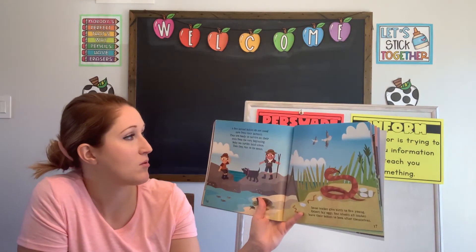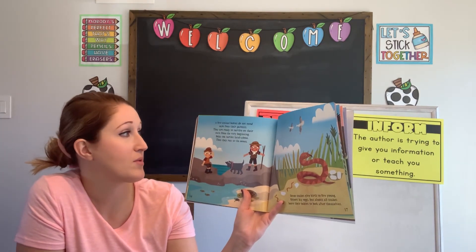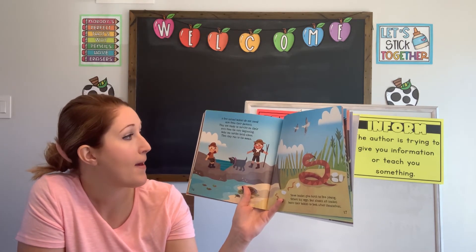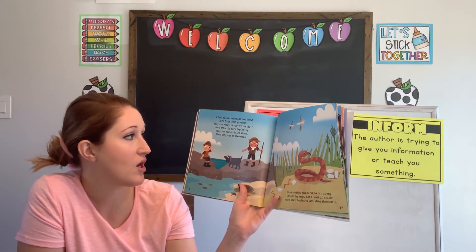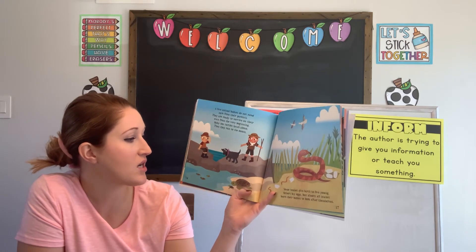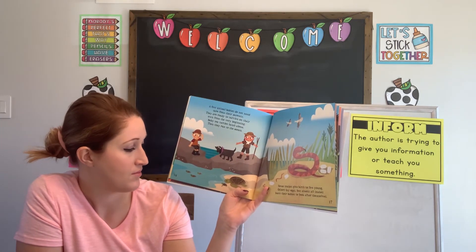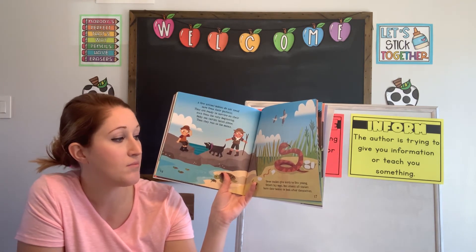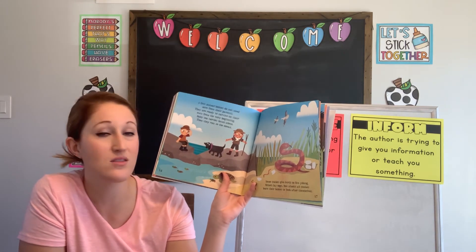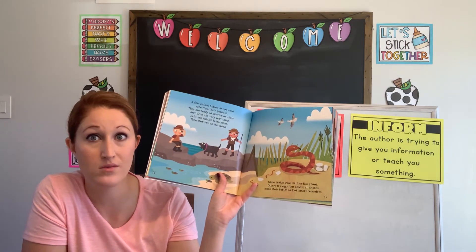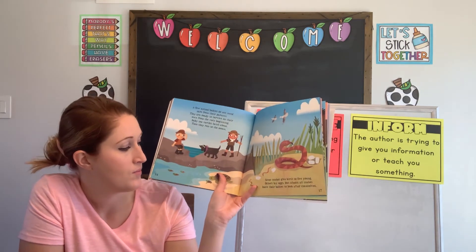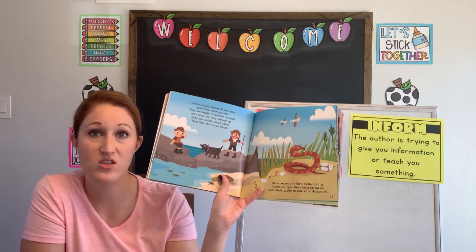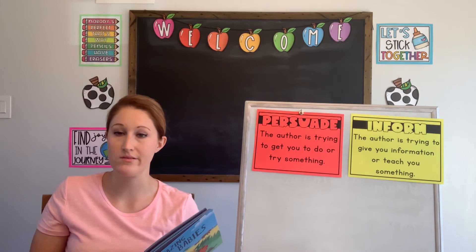A few animal babies do not need care from their parents. They are ready to survive on their own from the very beginning. Baby sea turtles hatch alone and then run to the ocean. Some snakes give birth to live young, others lay eggs, but almost all snakes leave their babies to look after themselves. They probably have to grow up pretty fast — gotta be ready in case any predators come along.